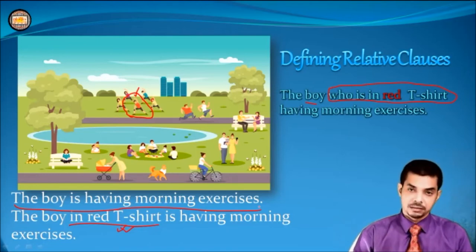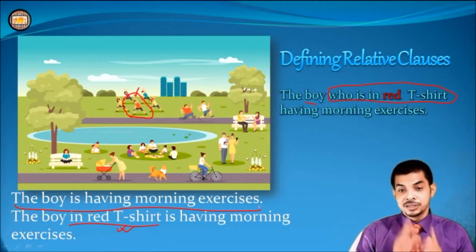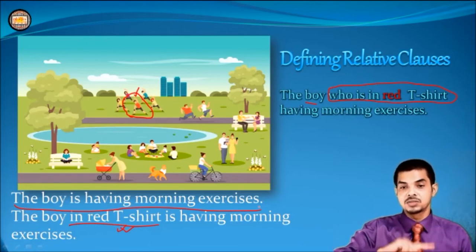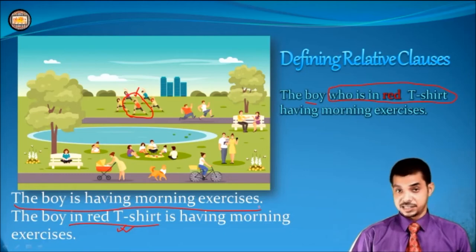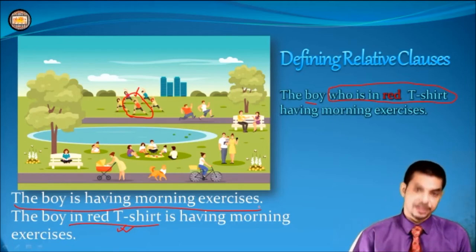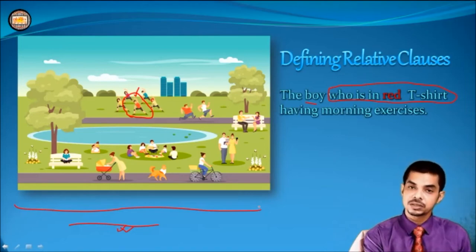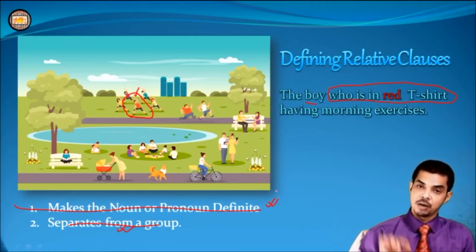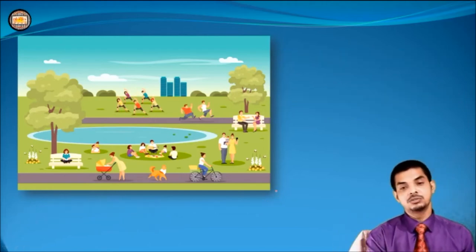For students, I have a very simple trick. Write down this sentence in your copy. When you have completed writing it down, put your finger on that relative clause 'who is in red t-shirt.' Now, without the relative clause, read the sentence — you'll find it remains incomplete, the sentence creates confusion. So you'll very easily understand that this is a defining relative clause and we must not put a comma here. Finally, we got two basic characteristics of defining relative clauses: first, it makes the noun or pronoun definite; second, it separates the noun or pronoun from a group.